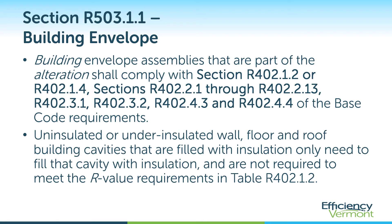Building envelope assemblies that are part of an alteration need to comply with the requirements for new construction of section R402 of the base code. One caveat is that uninsulated or under-insulated exterior building assemblies — such as walls, floors, or roofs — that are filled with insulation need only to fill that cavity and are not required to meet the R-value requirements of table R402.1.2. Essentially, any exterior assembly that is exposed during an alteration needs to have that cavity filled with insulation before that assembly is closed back up for completion.